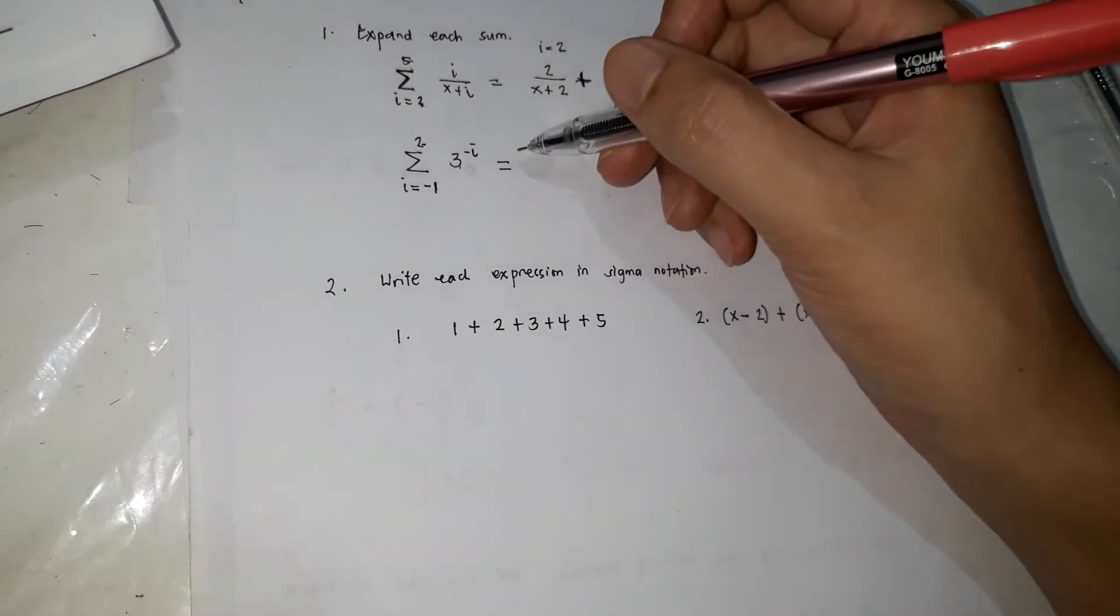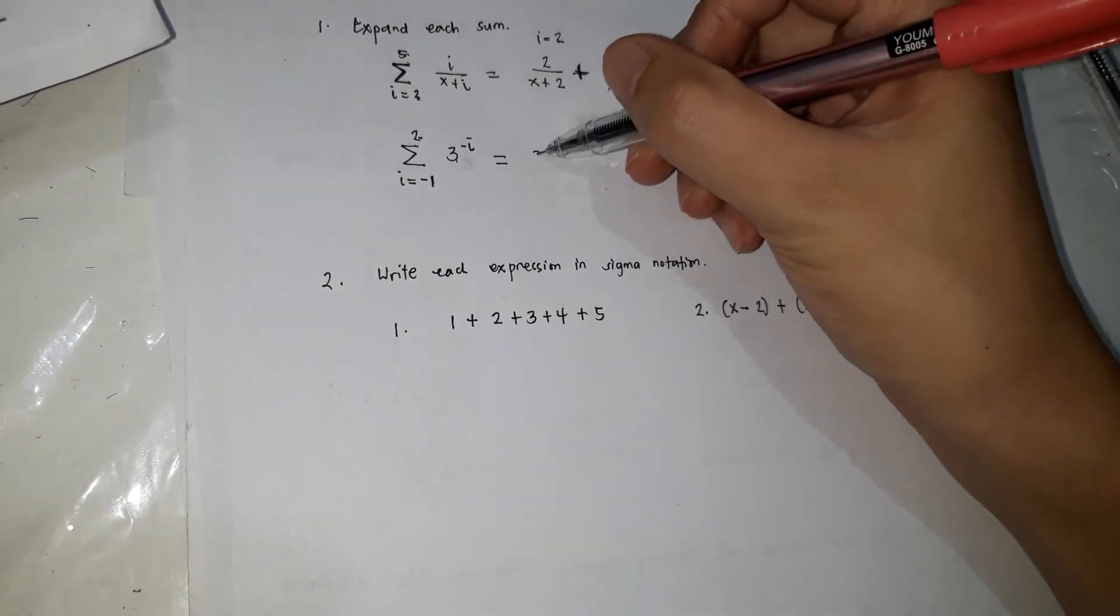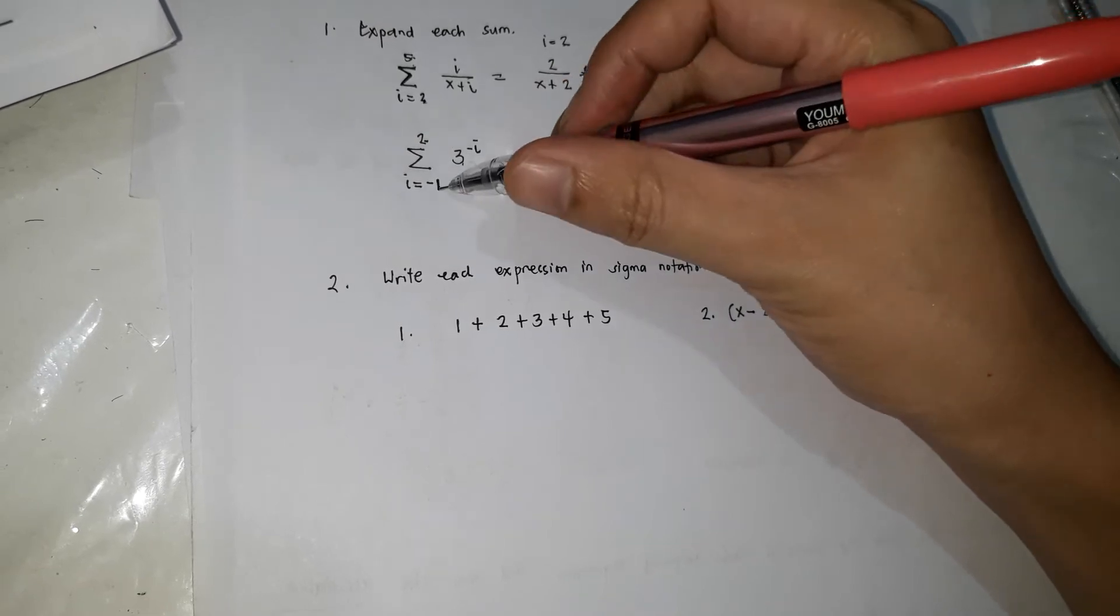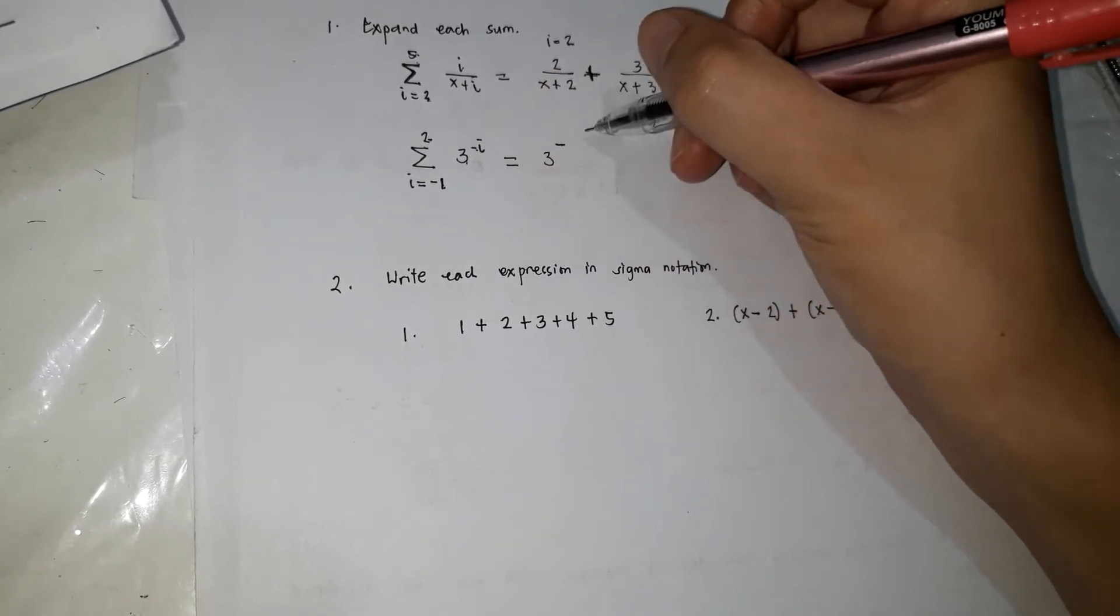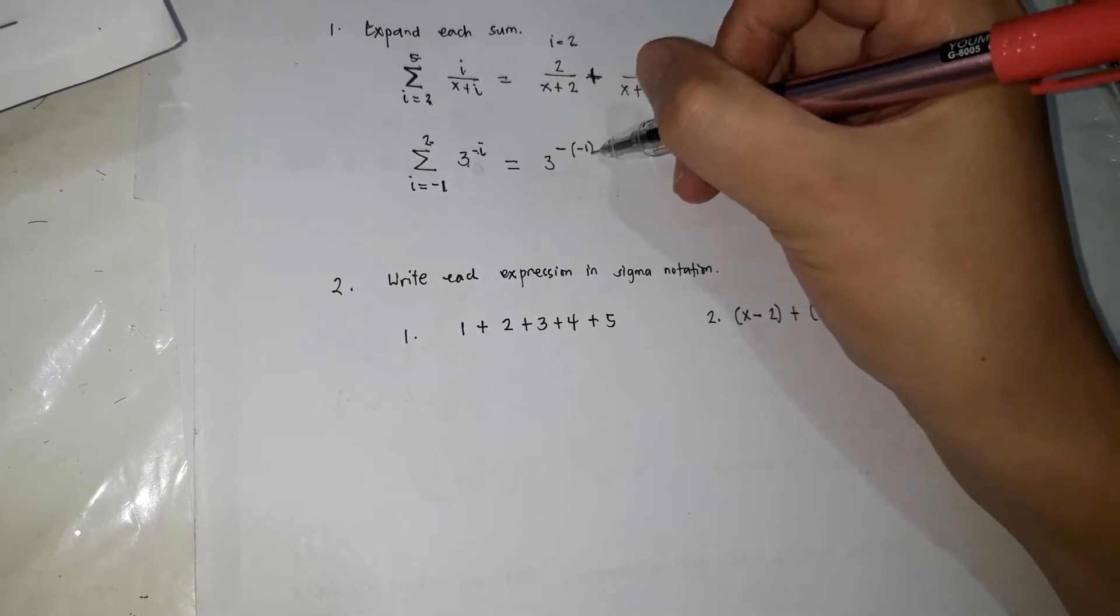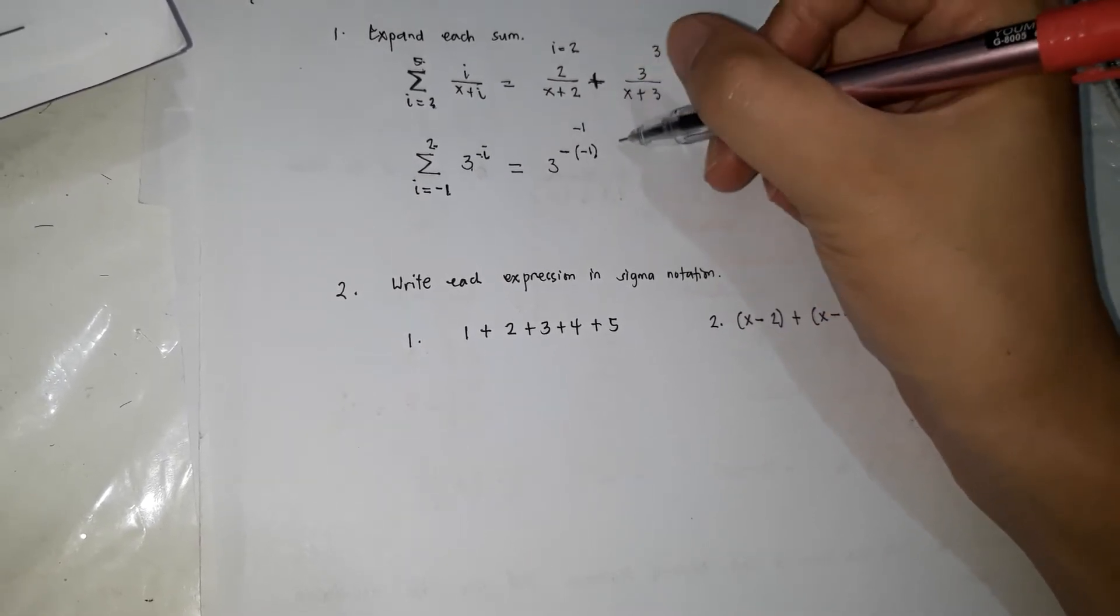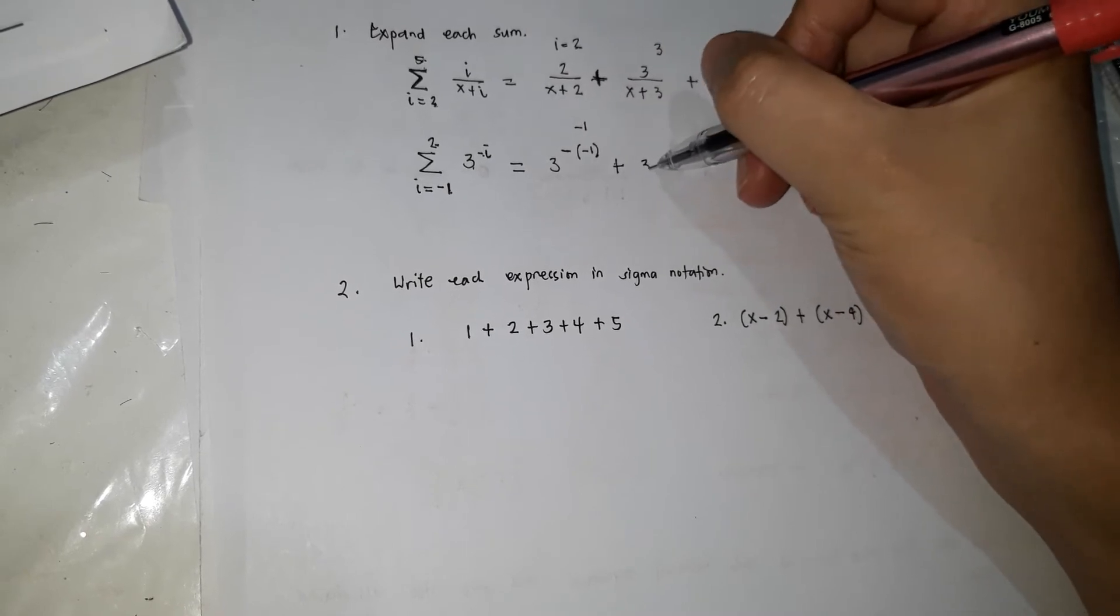So this one, ang first is, ang pinaka-unang value is negative 1. So 3 to the negative, ang i, palitan mo ng negative 1. So that's the first value, negative 1.